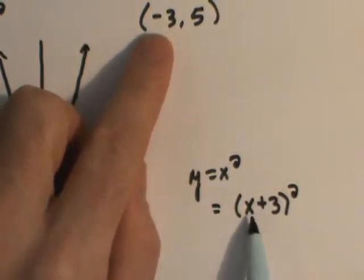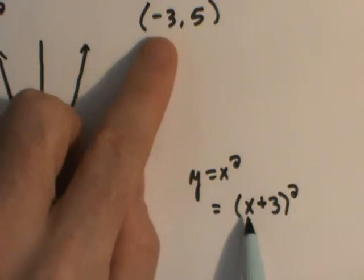The reason why we say plus three, it's the idea of solving this, finding a zero here. What would make this zero when I put negative three in for x? So when you have the parentheses like that, you'll always see the opposite value.